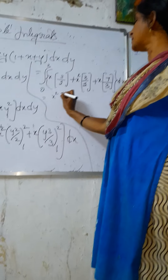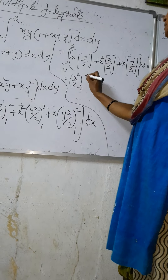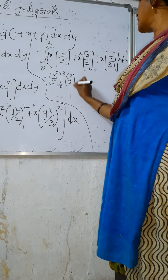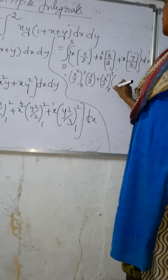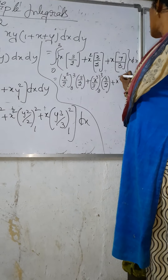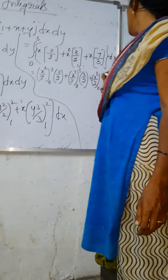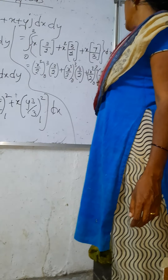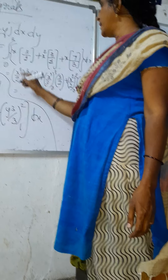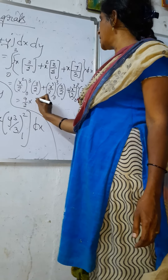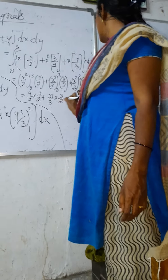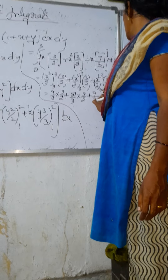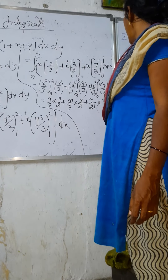Now integrating with respect to x: x terms give x²/2 from 0 to 3, times 3/2; x² terms give x³/3 from 0 to 3, times 3/2; and x terms give x²/2 from 0 to 3, times 7/3. Substituting: 9/2 × 3/2, plus 27/3 × 3/2, plus 9/2 × 7/3.